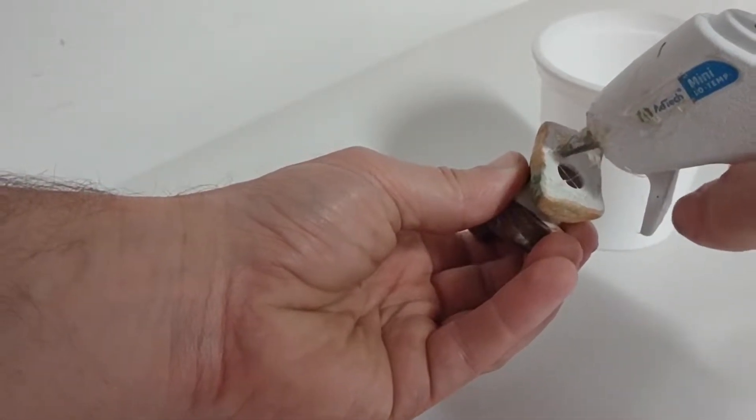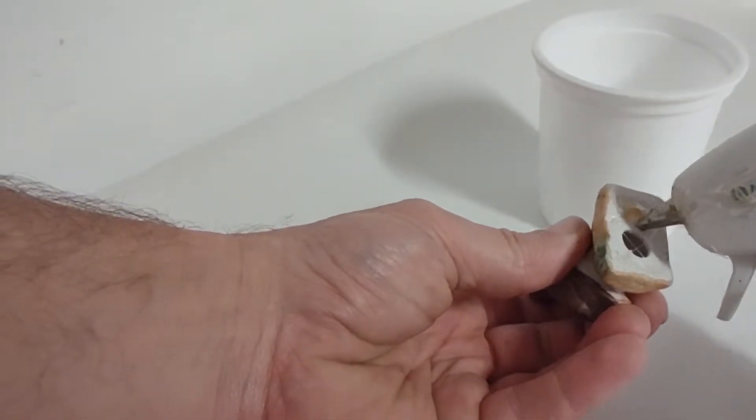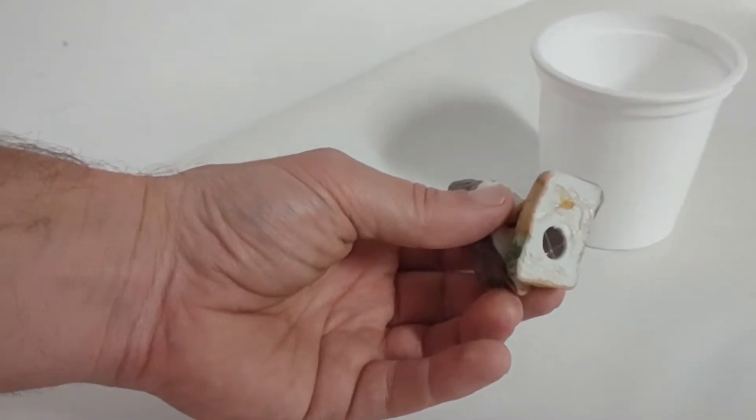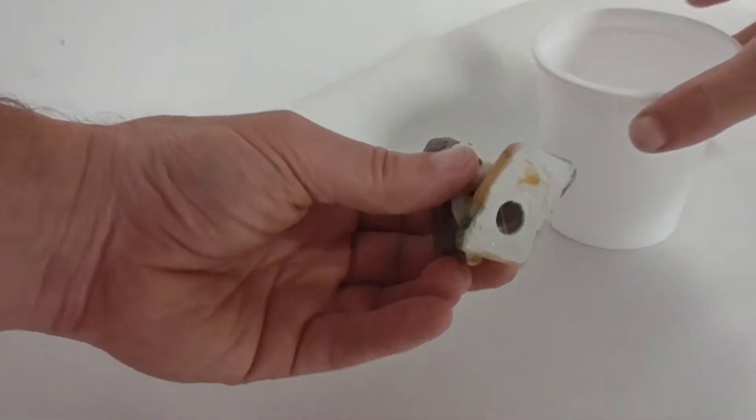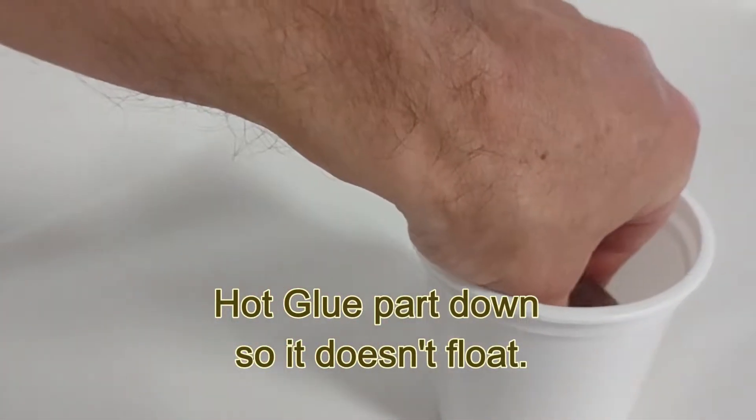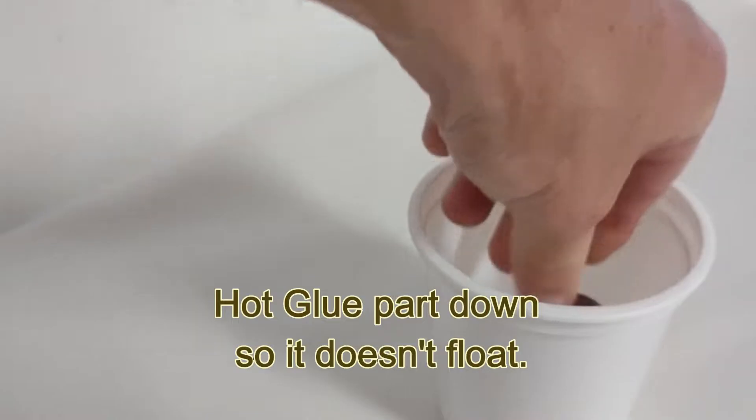This plastic container acts as your mold box. You can use pretty much anything you want as a mold box. I like the plastic containers because I can just cut them off at the end and it's really simple. Other people like to use Legos or even a plastic bag can be used as a mold box within a box.